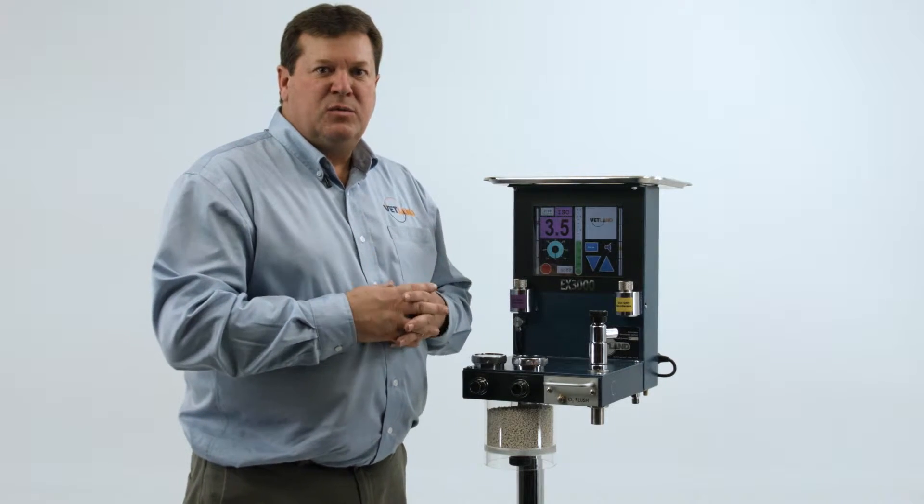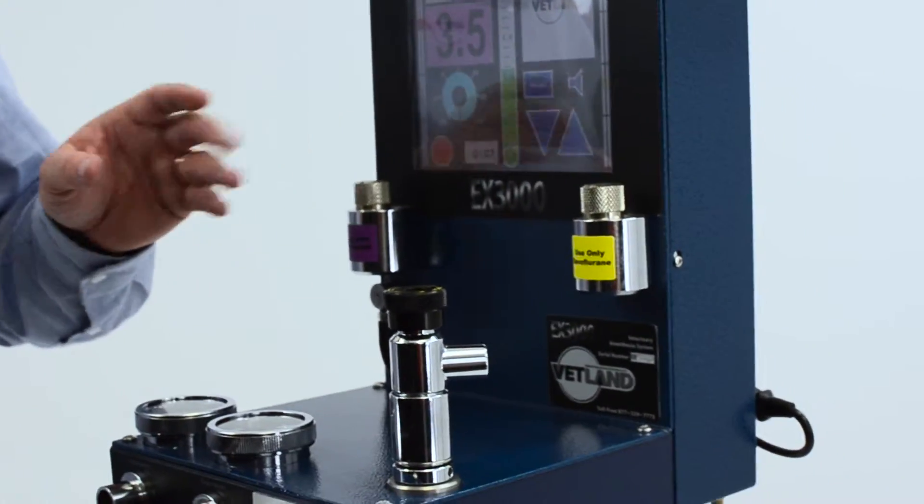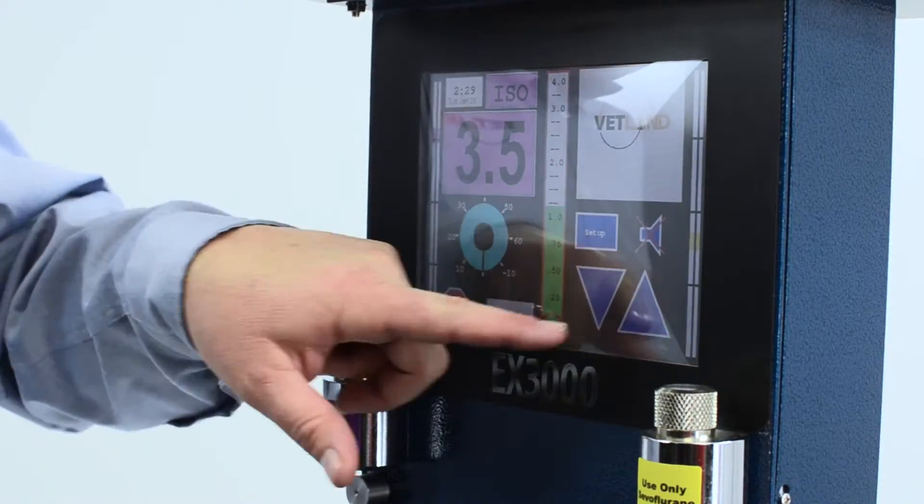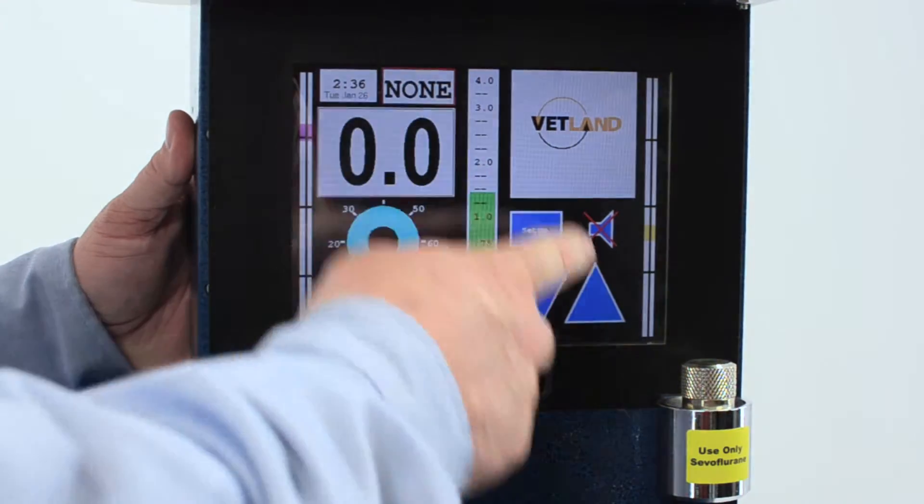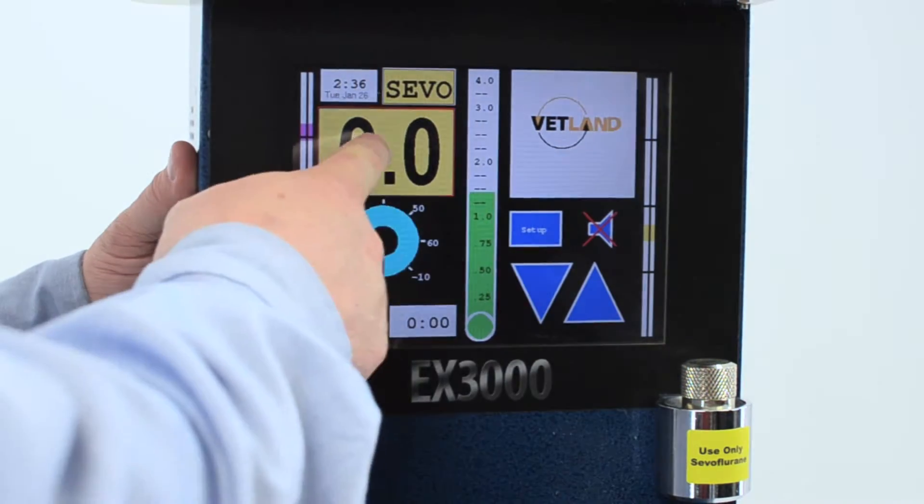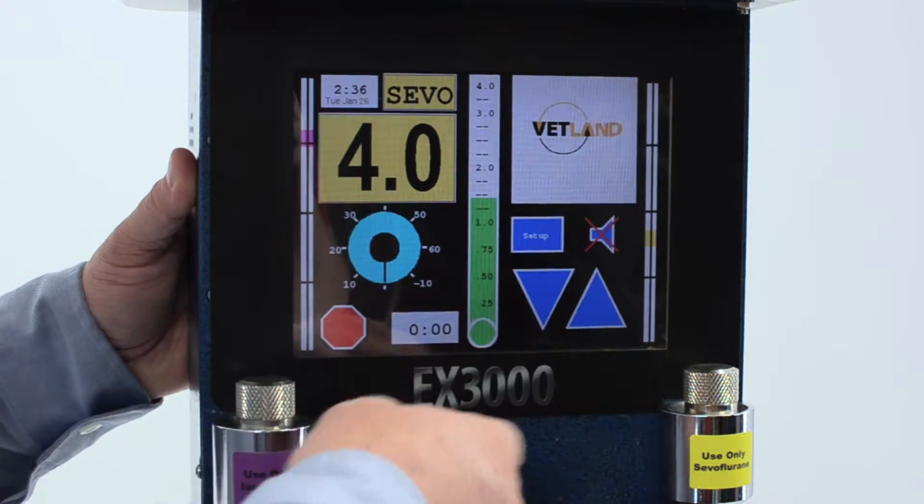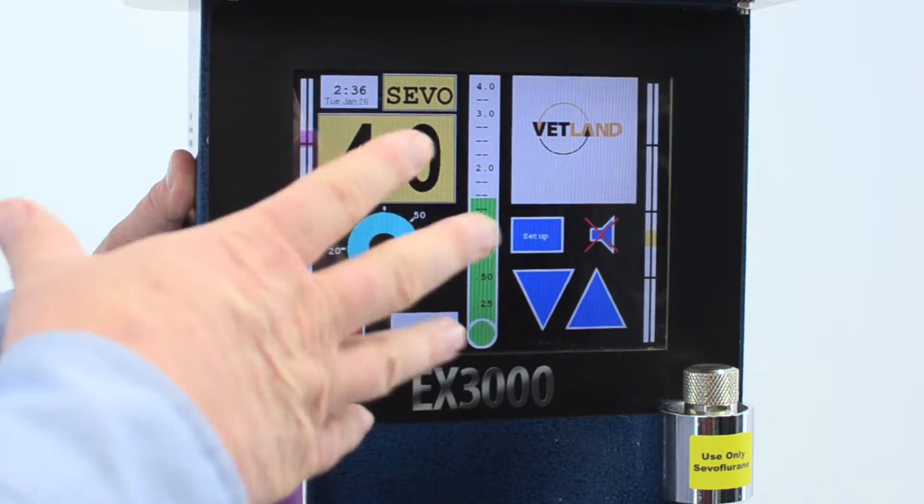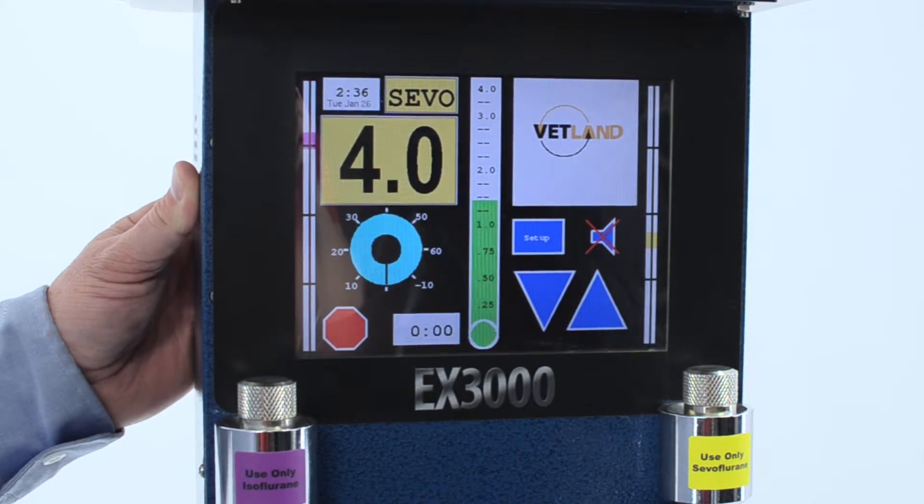The EX3000 is a color touch screen. If we want to increase the flows from one liter here to two, we just dial it up and it locks in. Then you can choose either isofluorane or sevofluorane, and then you touch this box and arrow up or arrow down to whatever percentages that you'd like to deliver. The system locks in and now it's delivering this mixture of oxygen and anesthetic drug.